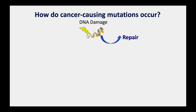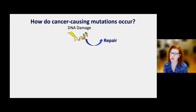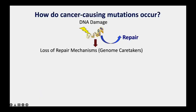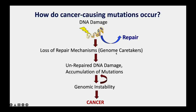Our cells are amazingly efficient at repairing DNA damage. We are constantly bombarded with things that cause DNA damage—from our GI system, UV light, and everything happening in our bodies. It's remarkable how the vast majority of that damage is repaired. But if there is a loss of a repair mechanism—those genome caretakers, those mechanics—then we have unrepaired DNA damage accumulating. The more damage accumulates, the more likely it is to have mutations in critical genes.